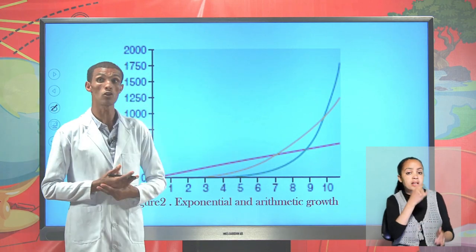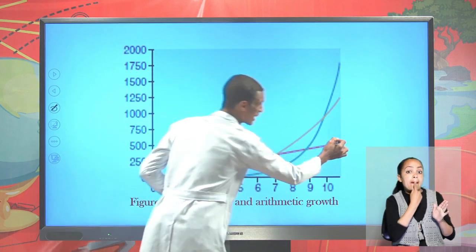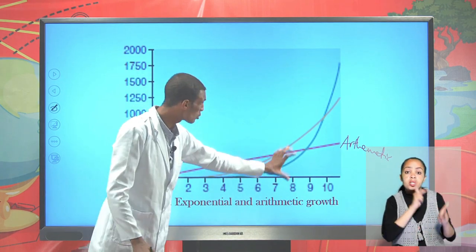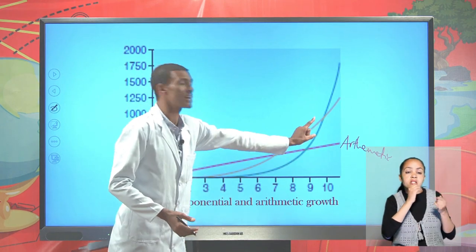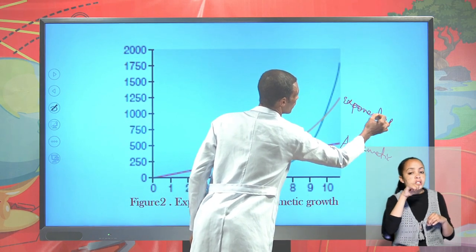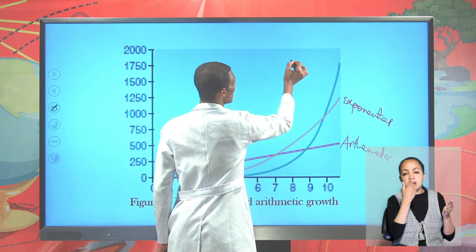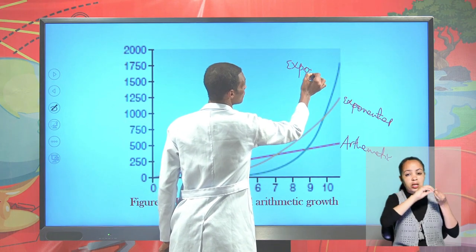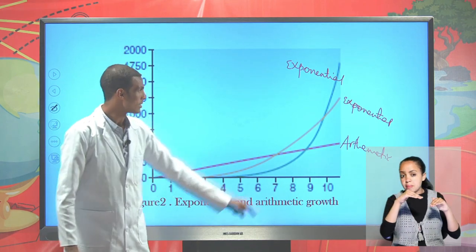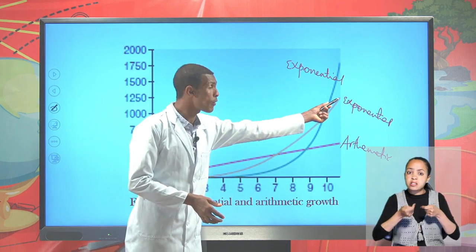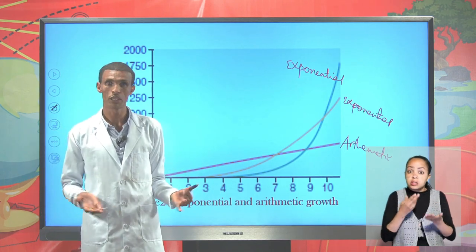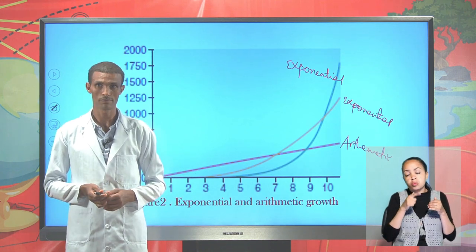There are three main lines that indicate the pattern of population growth. The red line indicates arithmetic population growth, where population size does not increase as much. The yellow line indicates exponential growth, and the green line indicates highly increasing population numbers exponentially. Potentially, population can grow until limited by environmental resources. The green line shows a much higher population number compared to the yellow and red lines.